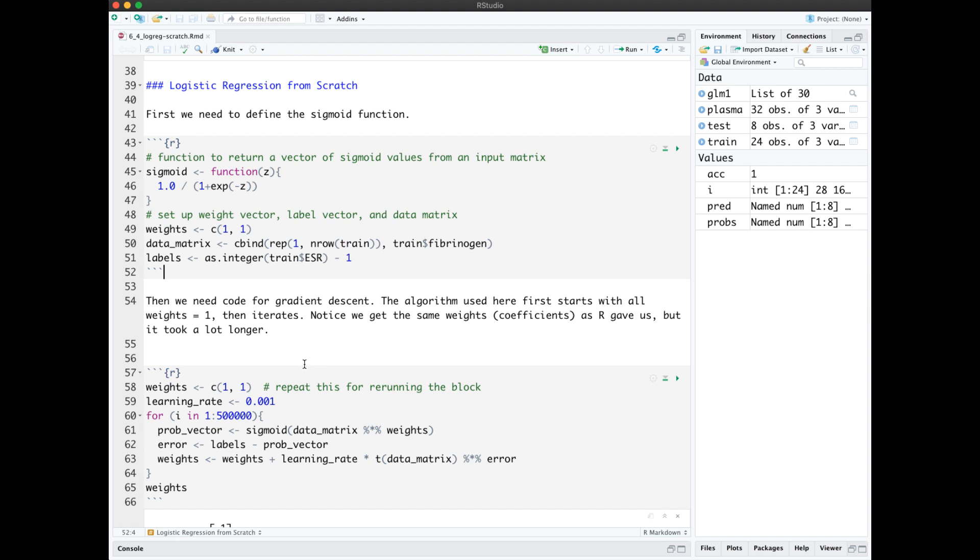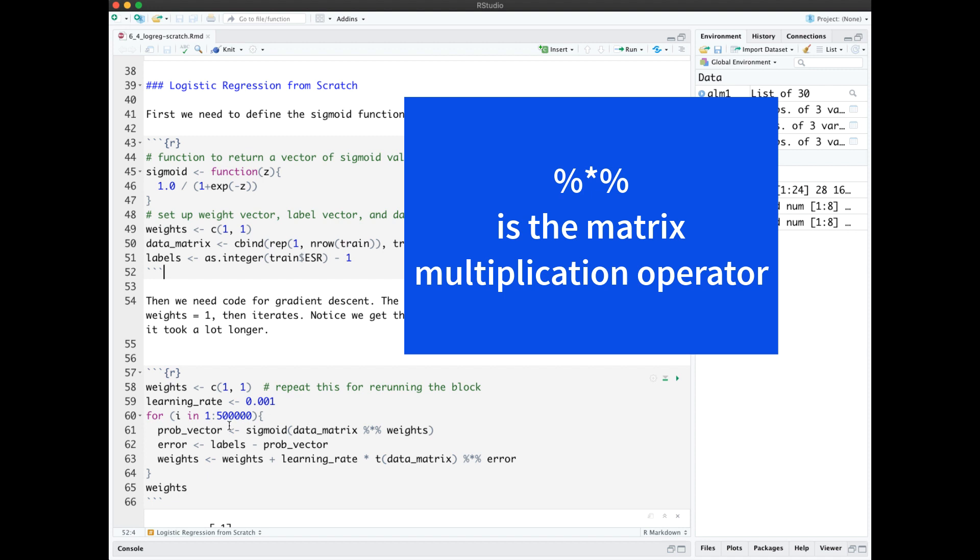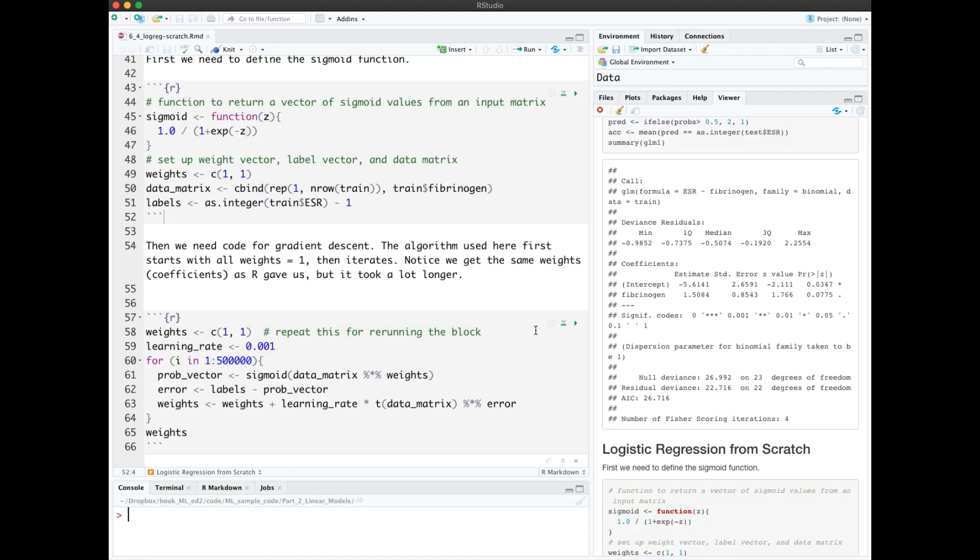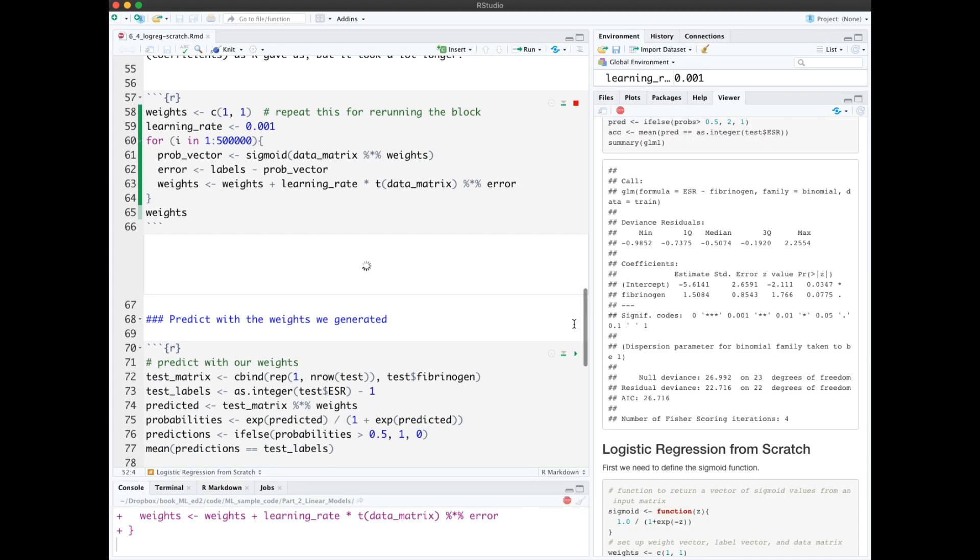Next we need code for the gradient descent part. This algorithm first starts with the weights 1 and a learning rate of .001, and then it iterates over many iterations, calculating the sigmoid of our matrix times the weights to get a probability vector, calculating our errors, and then updating according to our learning rate times the matrix times the error to eventually learn the weights. This will take a little bit to run. And we see it eventually got to the same weights over here, negative 5.6 and 1.5, that the R GLM function got.